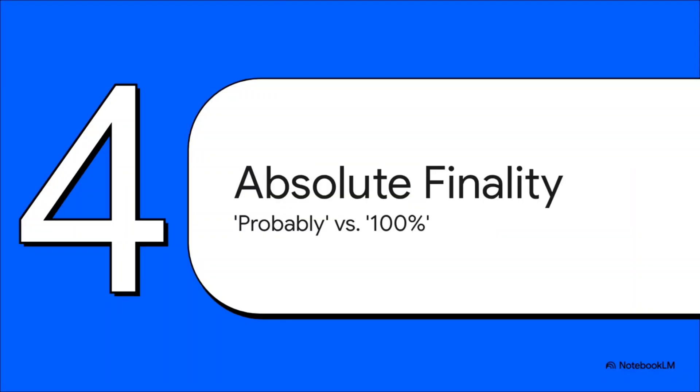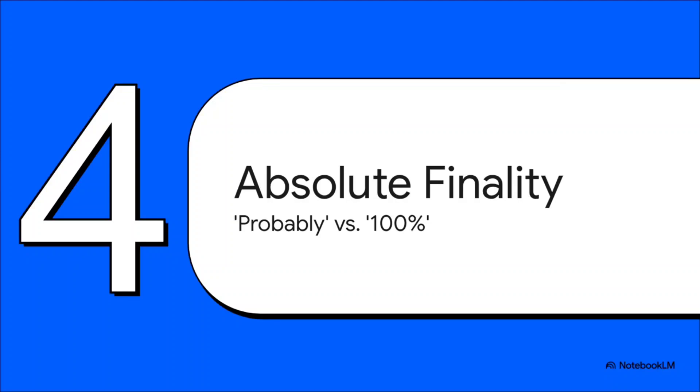After all that complexity, what's the big payoff? You get this incredibly powerful guarantee called absolute finality. Trust me, this is not just some techie detail. It's a critical feature that completely changes what you can build on a network. This highlights a huge difference in how systems achieve certainty. A system like Bitcoin, for example, offers probabilistic finality. Your transaction gets more and more secure over time, but mathematically it never quite hits 100%. That's why you have to wait for confirmations.